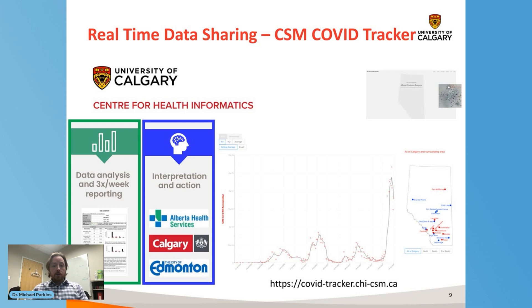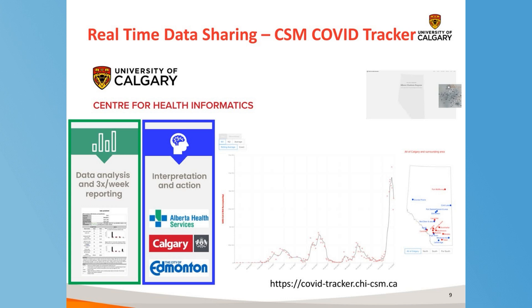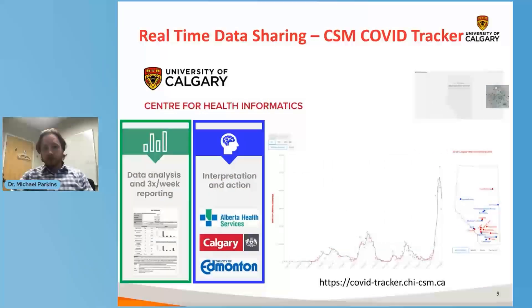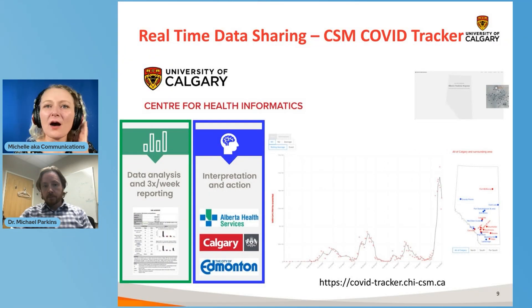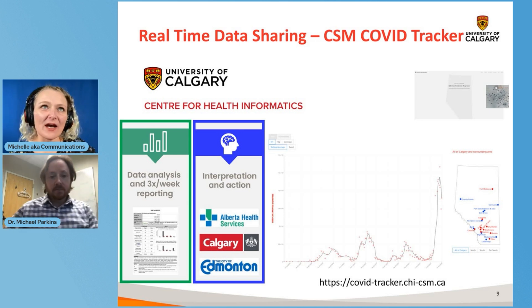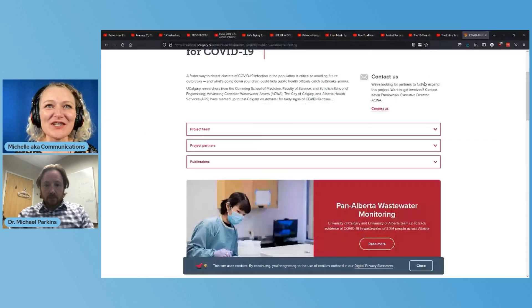Then we go through a process of data reporting where that data is put into action. The screen capture here is of the CSM COVID tracker produced through the Center for Health Informatics at the University of Calgary, courtesy of Tyler Williamson and his group. If you click on that it should take us to the website in real time. Chad made it happen — click on that top box there, then the wastewater tab, which is the fourth one over.